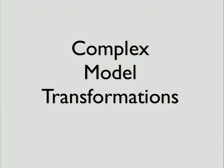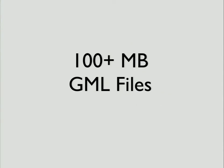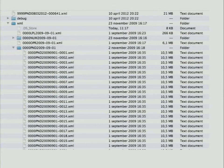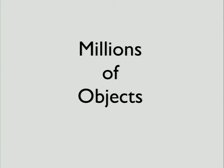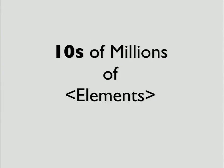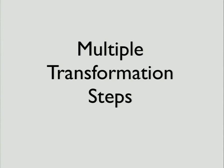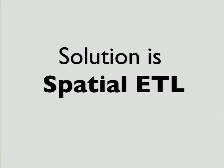But we want to do something useful with this — let's say make a map, make a geocoder of the addresses. So we have to deal with complex model transformations. And not only are the models complex, but there are huge files — we're talking gigabytes of GML files. So this is part of the Dutch address dataset. When you download it you get all these XML files. That means there are millions of objects and maybe tens of millions of elements. To transform this, to do something useful like putting it in a database and making a map, we need spatial ETL.